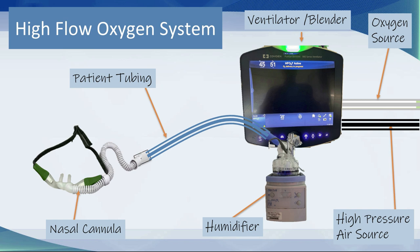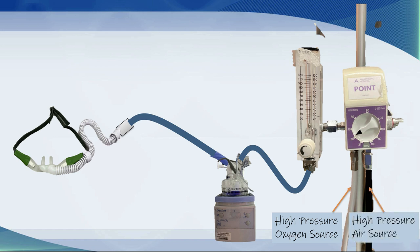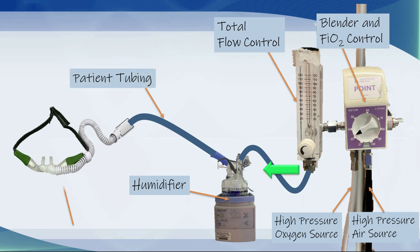In one example, a patient is receiving 45 liters per minute of constant flow from the high flow source at 51% oxygen. In an alternative system with a separate high-pressure oxygen and air source, the blender controls FiO2 — set here at 30% — while a separate high-flow flow meter controls total flow, for example 30, 40, or 50 liters. The humidifier conditions the gas before it reaches the patient via nasal cannulae.